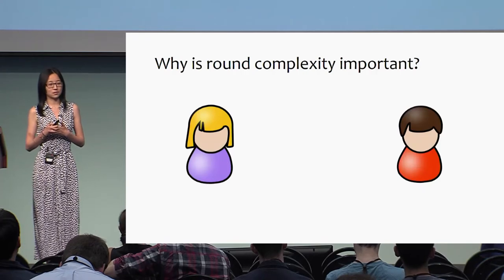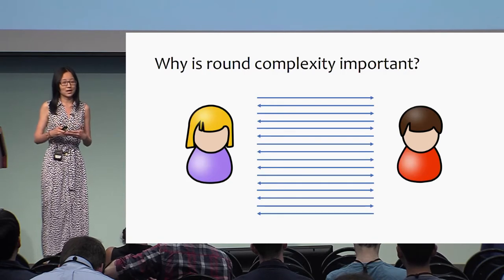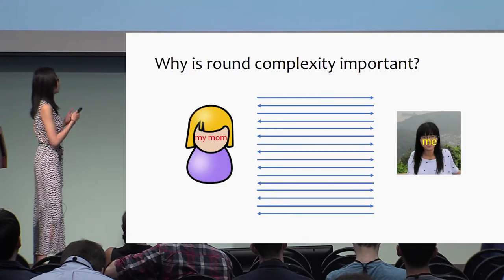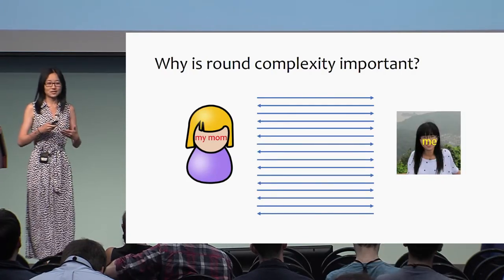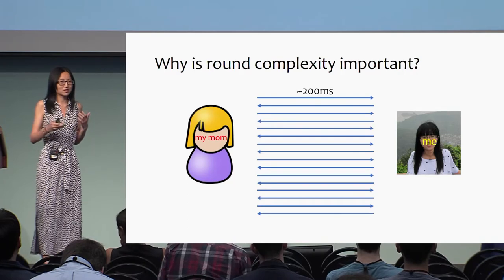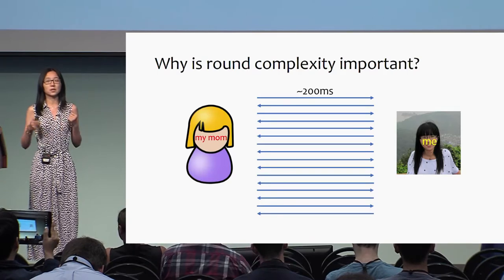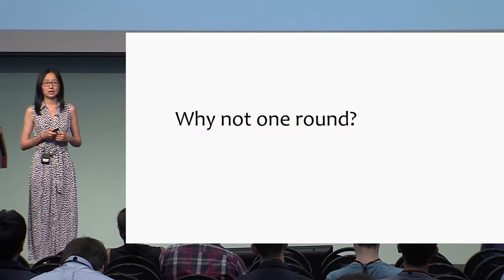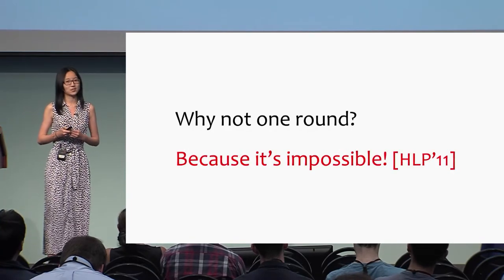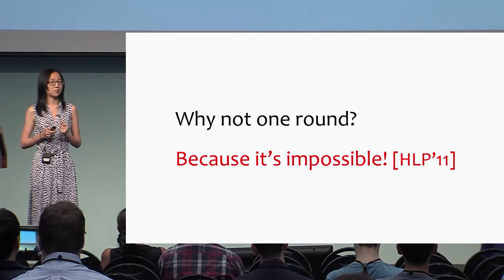Why do we care about round complexity? Why is it important to minimize the number of rounds? Consider a protocol between two parties — say, me and my mom, who sits in China — which means the network latency between us becomes a few hundred milliseconds. So most of the work of this protocol has to be spent on network latency. It's very important in MPC to minimize the round complexity. We don't consider one round because it's impossible to compute certain functions in one round, so two rounds is the minimum we can hope for.